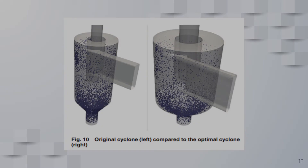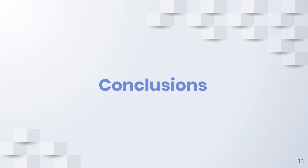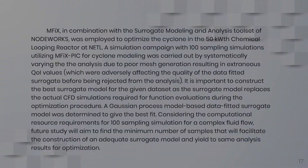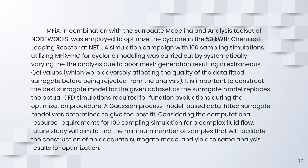The original cyclone geometry is compared to the optimal cyclone geometry. Conclusion: MFIX in combination with the surrogate modeling and analysis toolset in Node Works was employed to optimize the cyclone in the 50 kW chemical looping reactor at NETL.